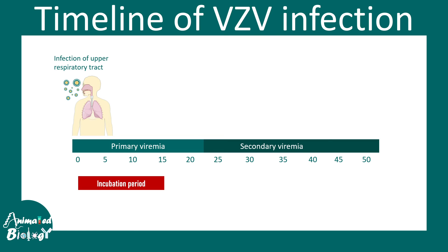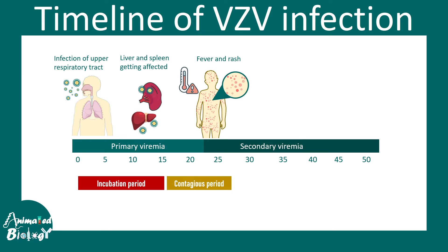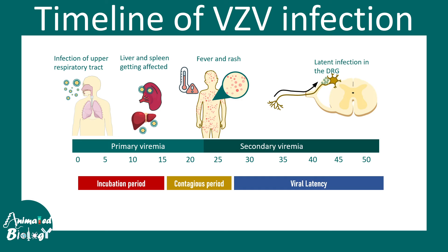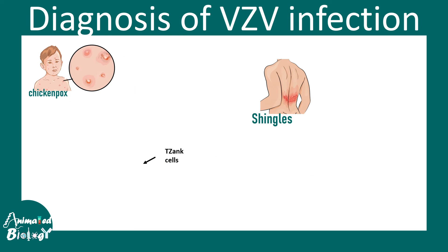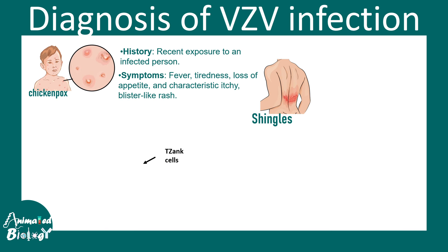Here is a timeline of VZV infection: there is an incubation period, followed by an infection phase where the upper respiratory tract is infected and the liver and spleen get infected within about 10 days. Then there is a contagious period with active rashes on the skin and possibly fever. Eventually the virus enters a latent phase in the dorsal root ganglion — it is not eliminated — and can reactivate if immune suppression occurs.